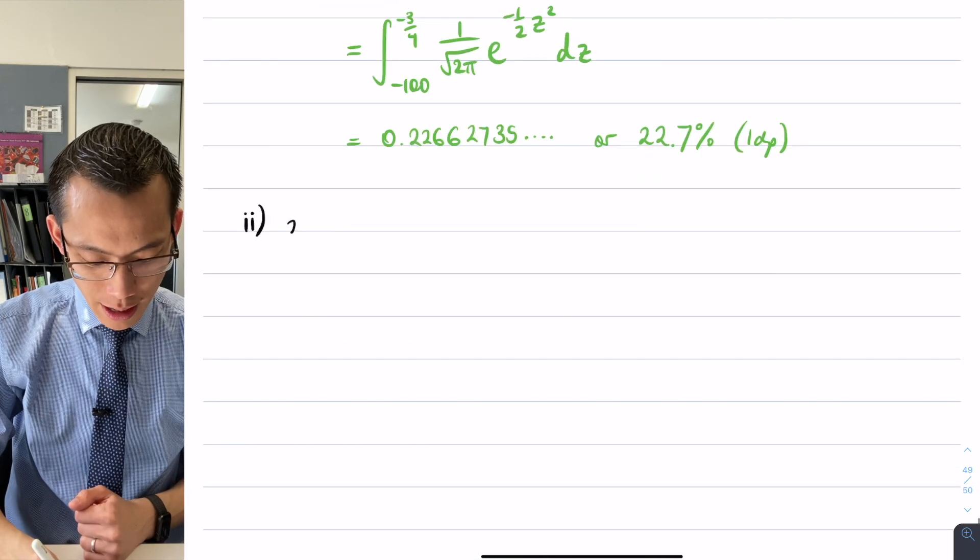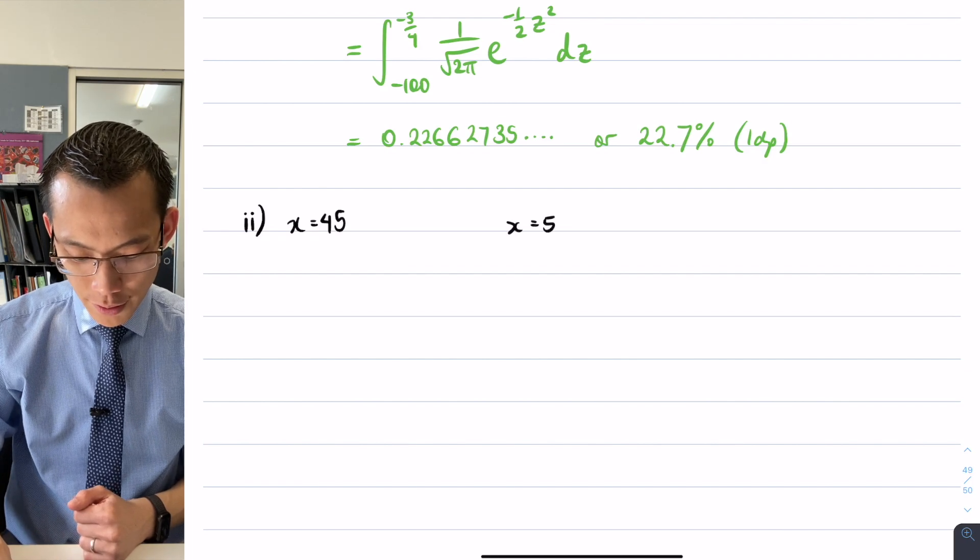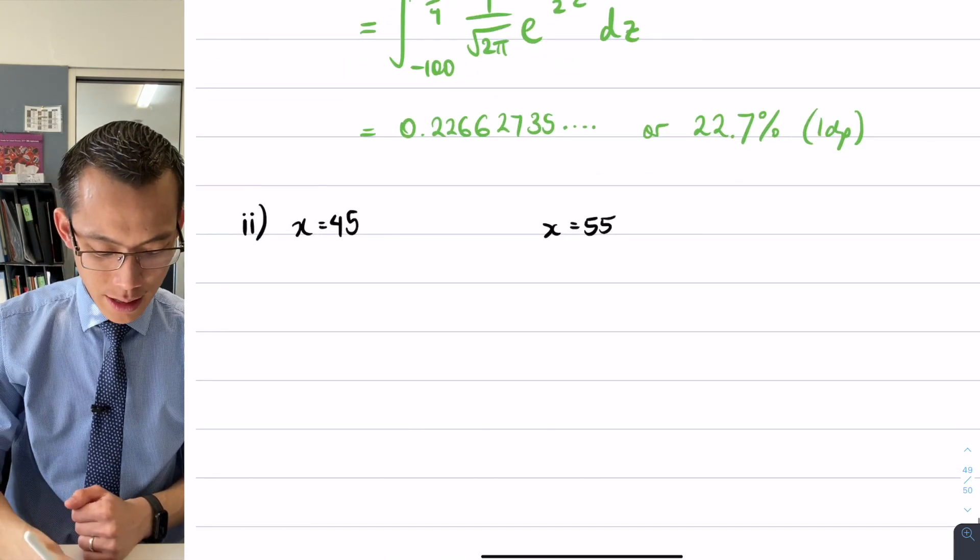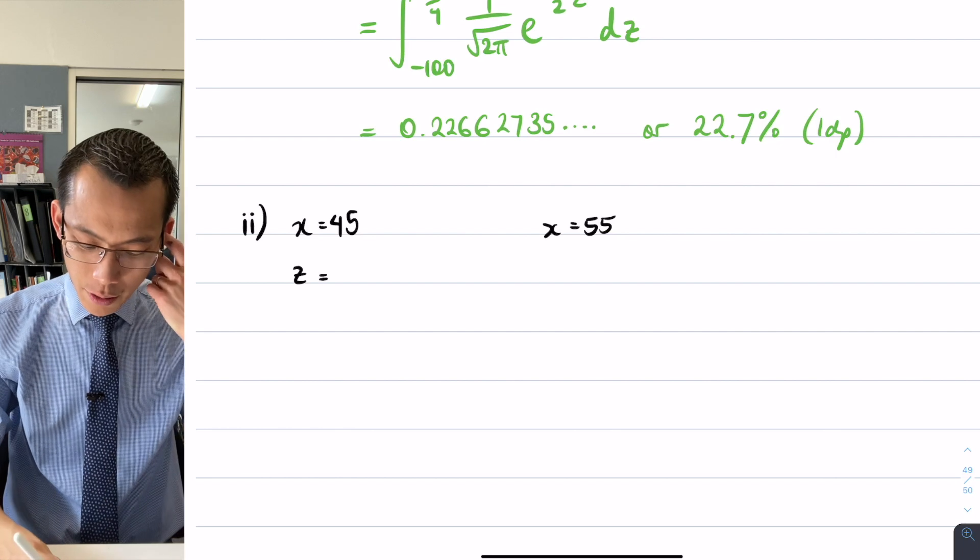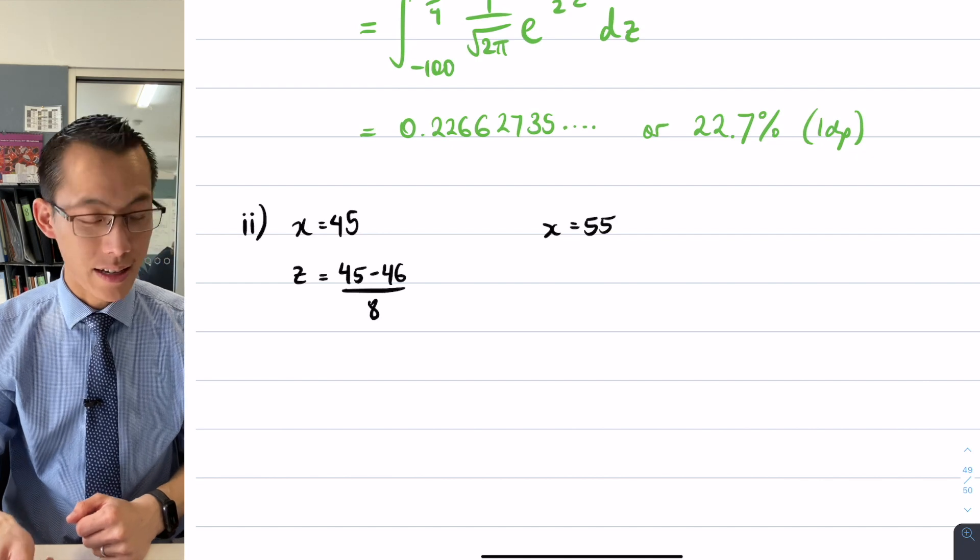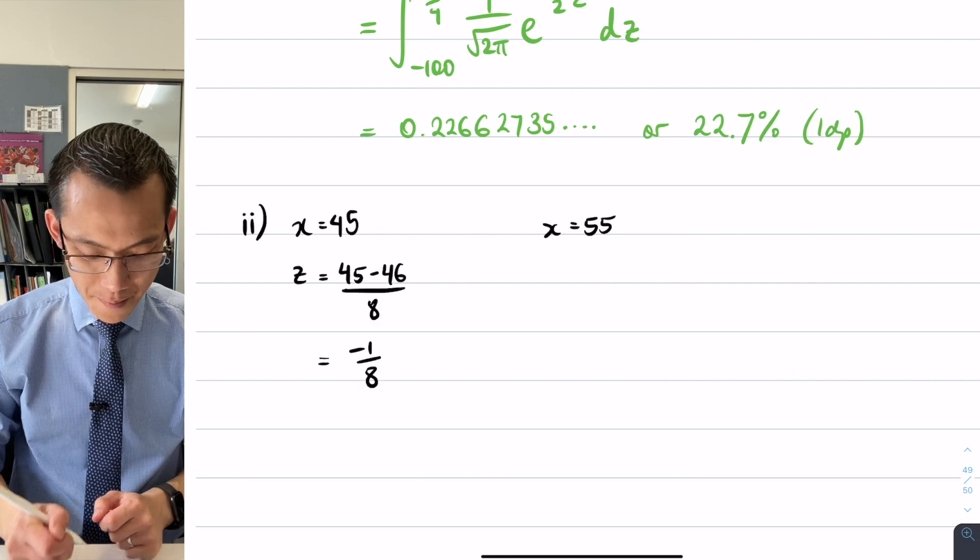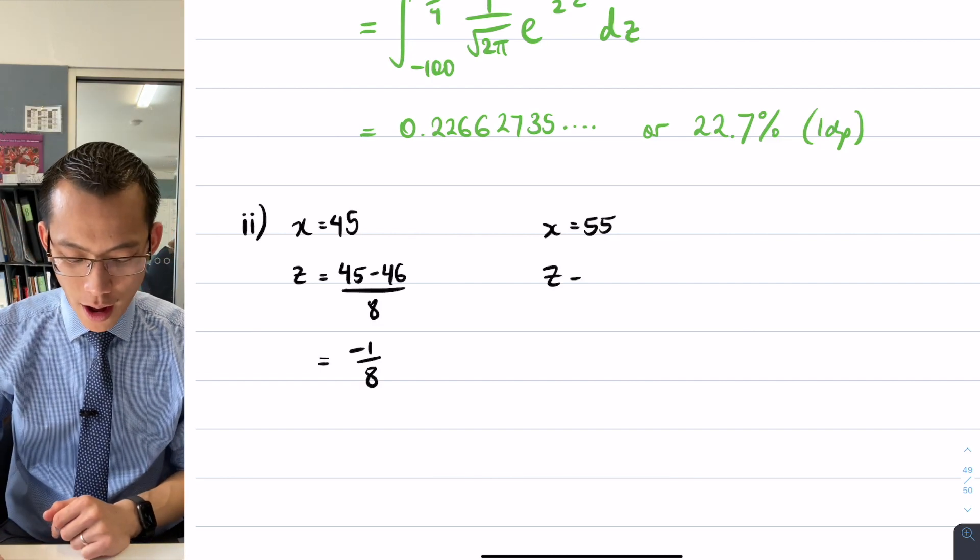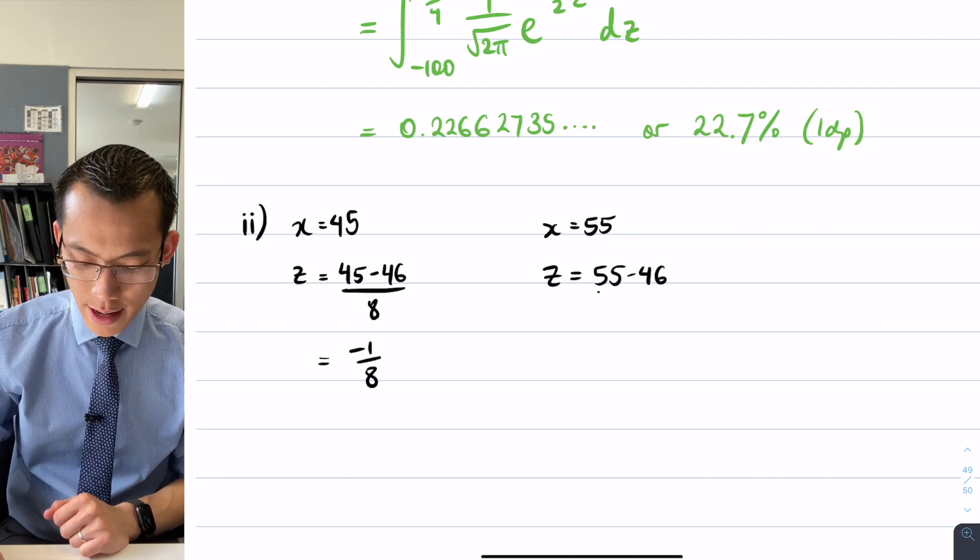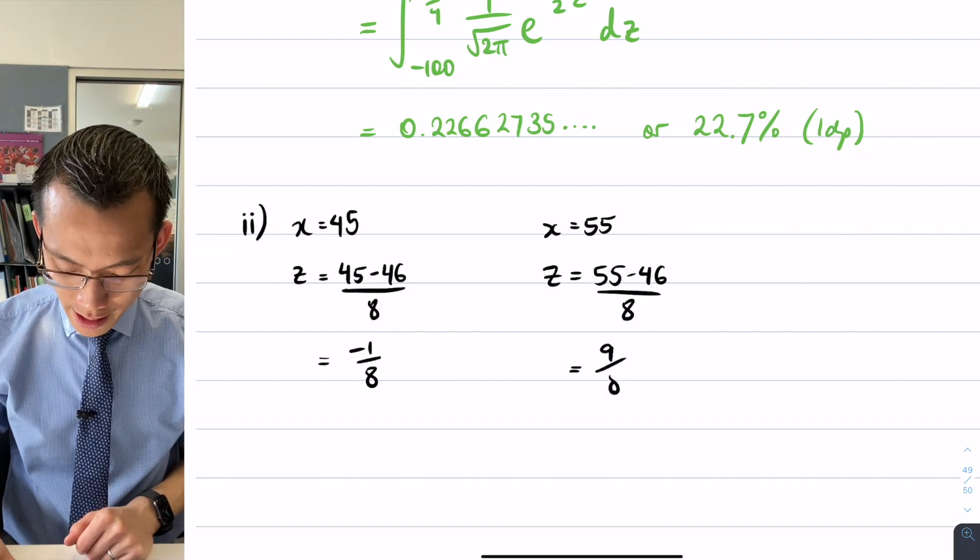So I have two times: I've got 45 and then I've got 55. Just double-check that those are the correct boundaries—yes. So I want the z-score that corresponds to each of these. So for 45, I'm going to get 45 take away—we said the mean was 46—and then I divide by my standard deviation. So I can already tell 45 take away 46 is just negative 1, and then I divide by 8. And I'll do the same thing for the highest score, so I'm going to get 55 take away my mean divided by my standard deviation. 55 take away 46—that's 9 over 8.